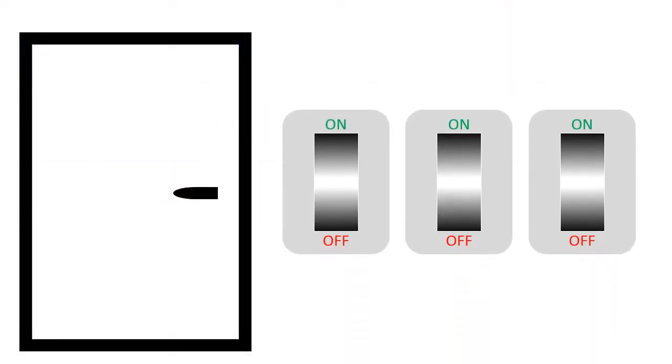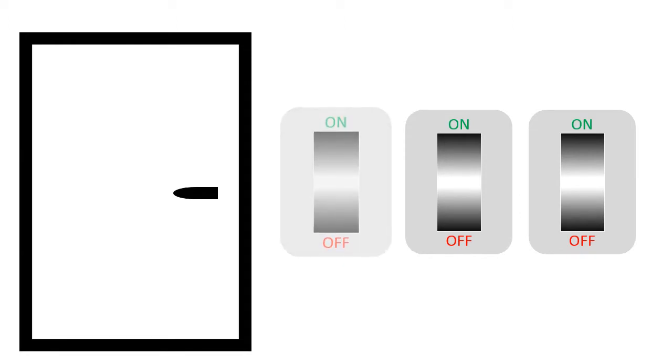You have a set of three light switches outside a closed door. One of them controls the incandescent light bulb inside the room. With the door closed, you can turn the light switches on or off as many times as you would like. You can go into the room one time only to see the light.